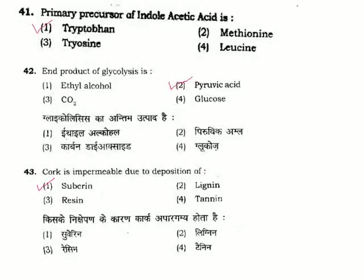Question 41: Primary precursor of indole acetic acid is — indole acetic acid is an auxin, and the primary precursor is the amino acid tryptophan. Correct answer is Option 1. Question 42: End product of glycolysis is — glycolysis of 1 molecule of glucose yields 2 molecules of pyruvic acid. Correct answer is Option 2.